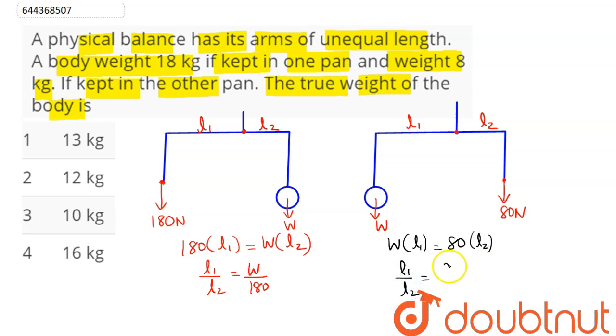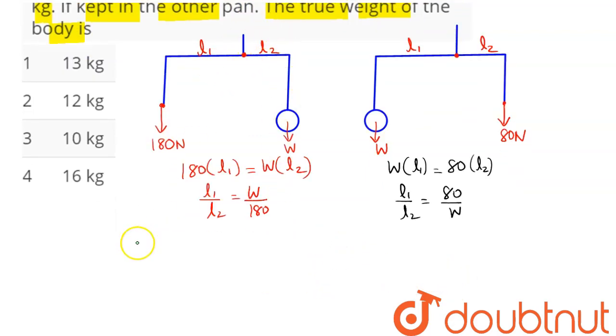So here also l1/l2 comes out as 80/W. So here we can equate these two. We get the relation: l1/l2 being equal, so W/180 = 80/W. So W here comes as square root of 80 × 180.